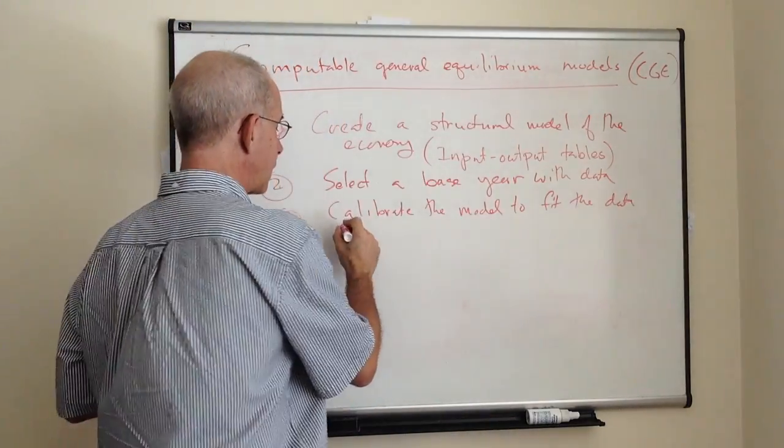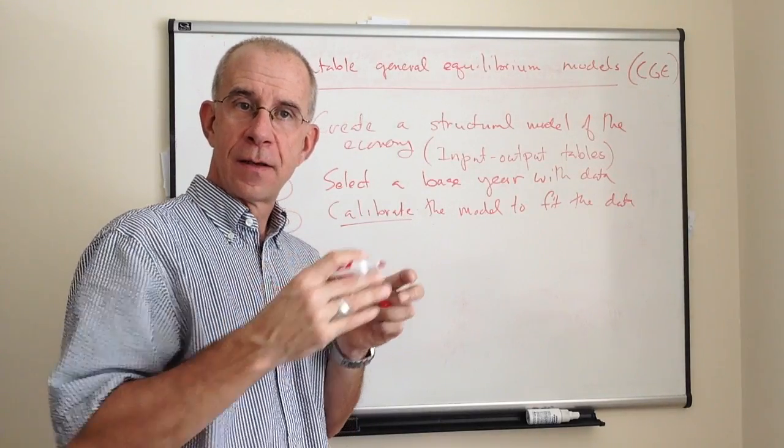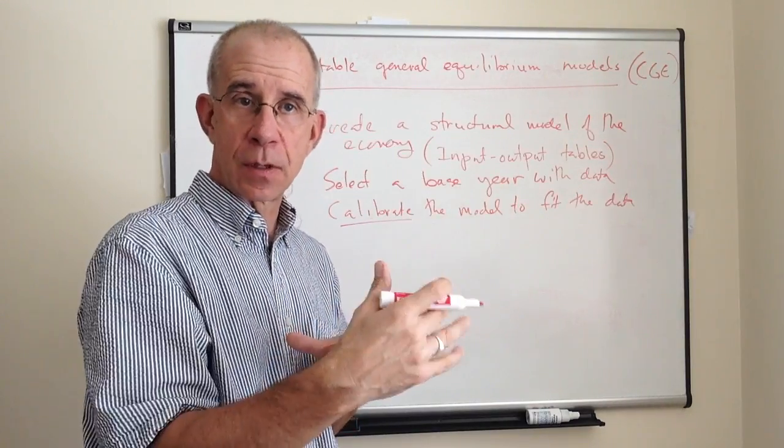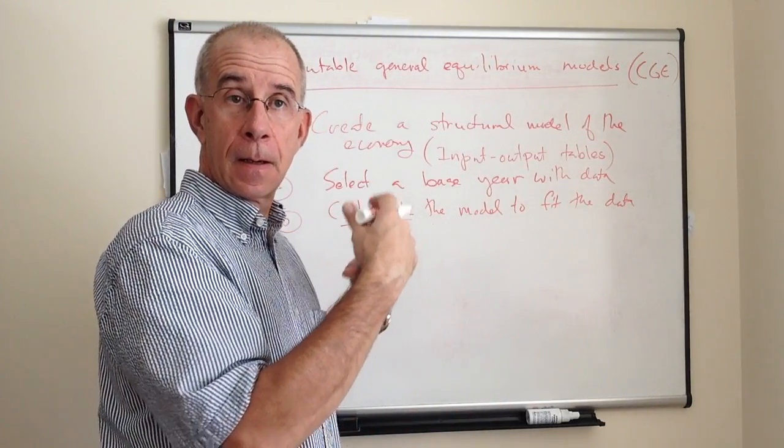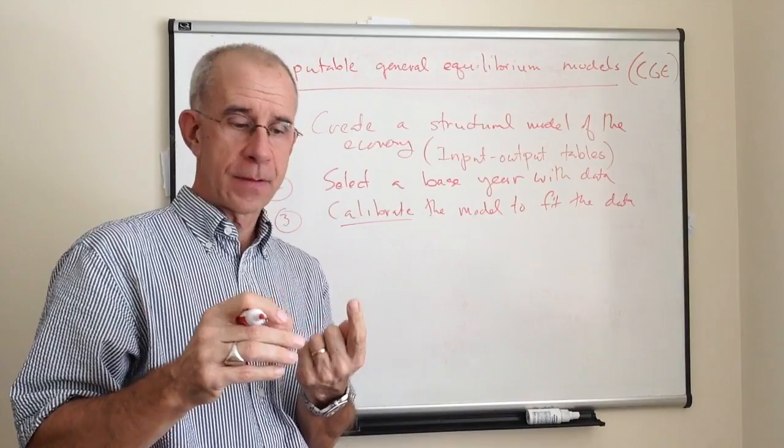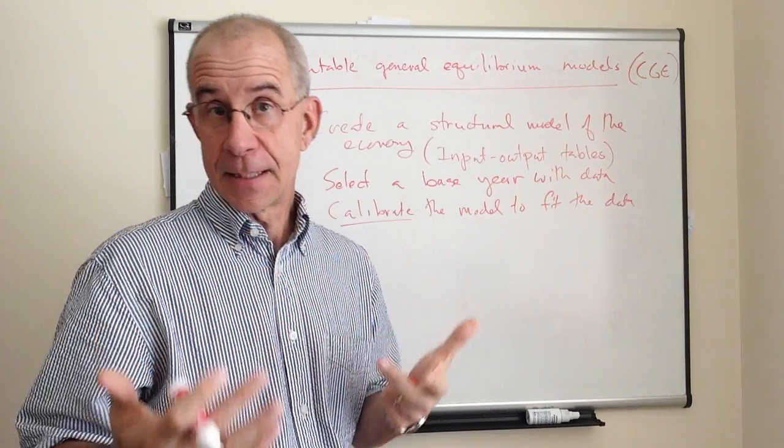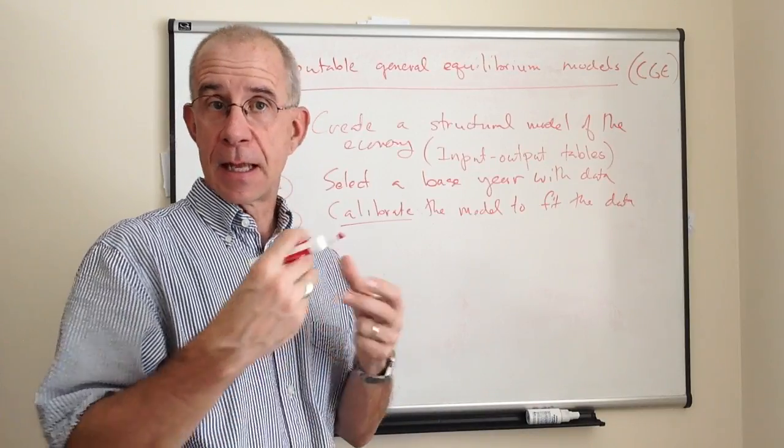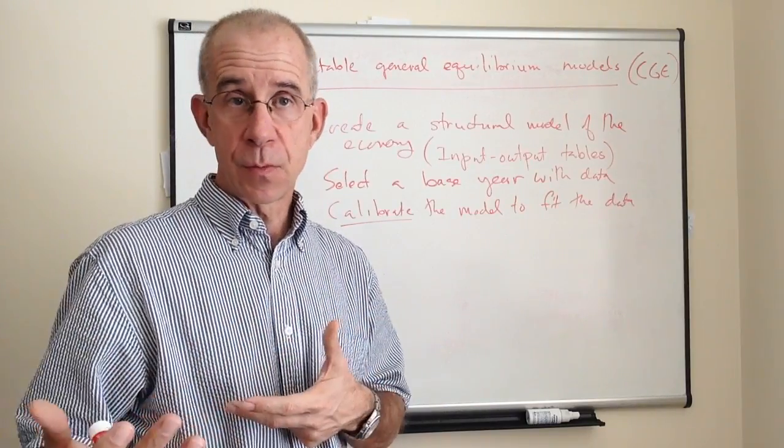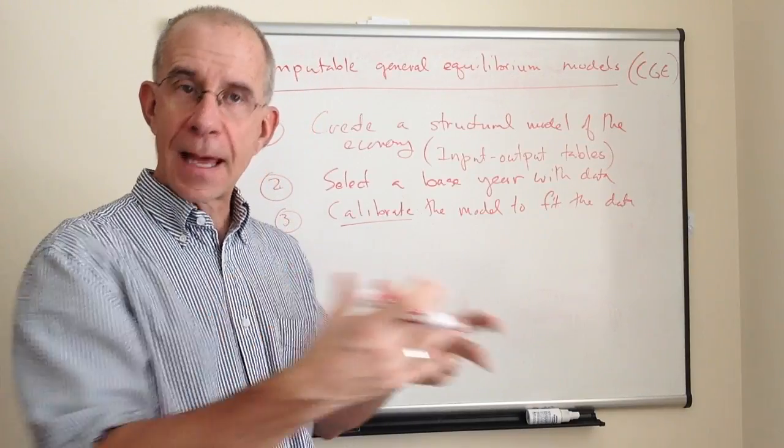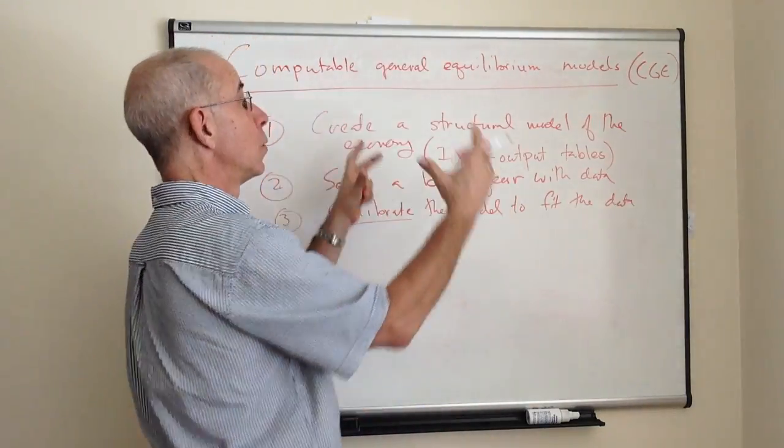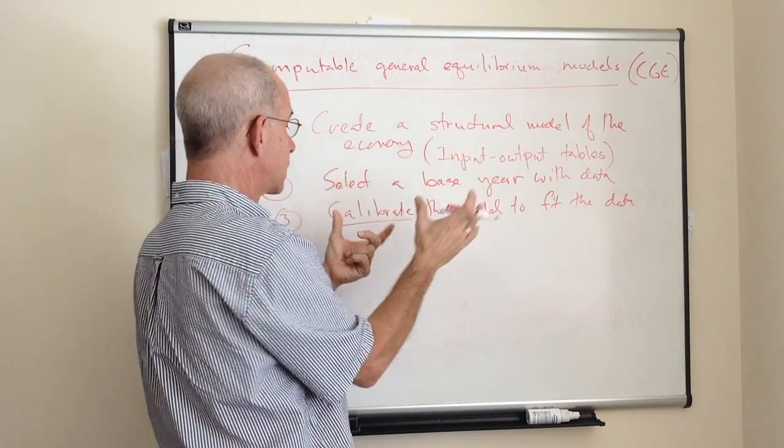The word calibrate means that they try and figure out what various parameters need to be in order to create supply-equal-to-demand given the structural model of the economy. In that structural model, there are often assumptions about elasticities: elasticity of substitution between different inputs, the elasticity of demand when price changes, the elasticity of supply with respect to price, a bunch of elasticities. That data is pulled from econometric studies, from studies from other places.